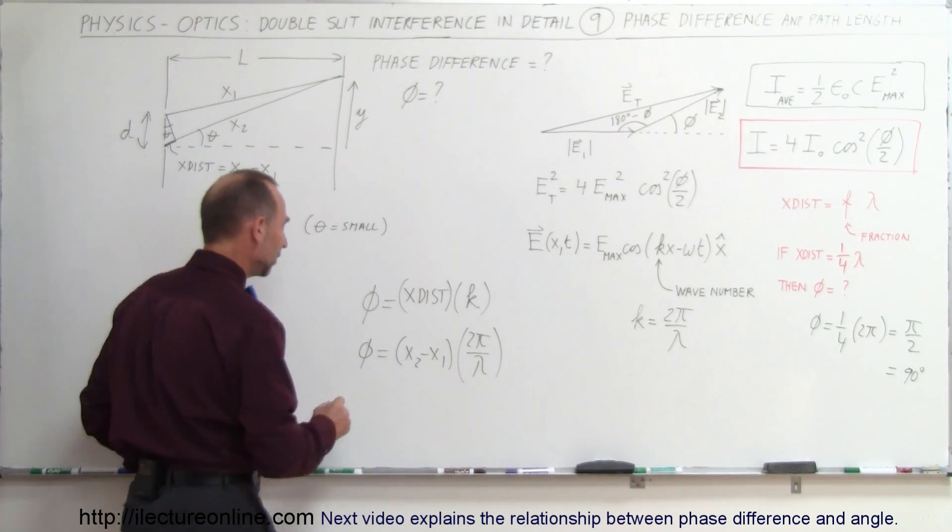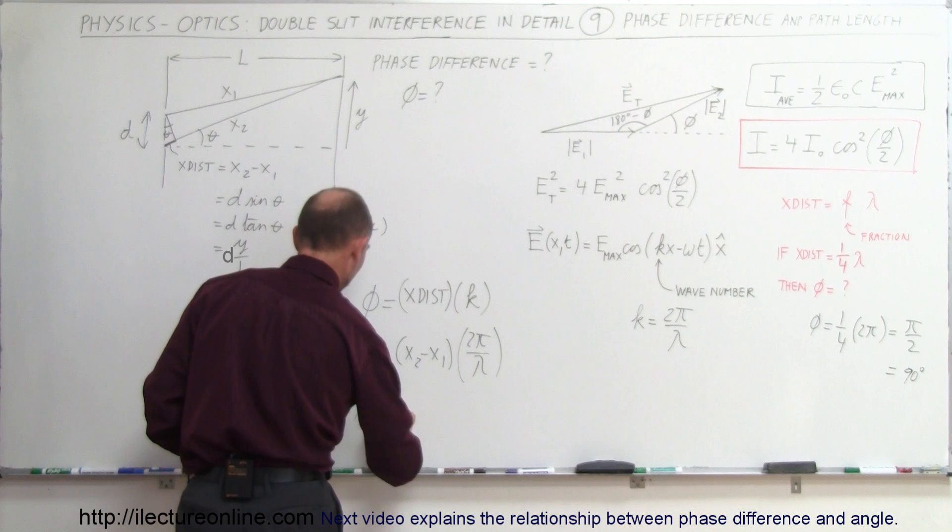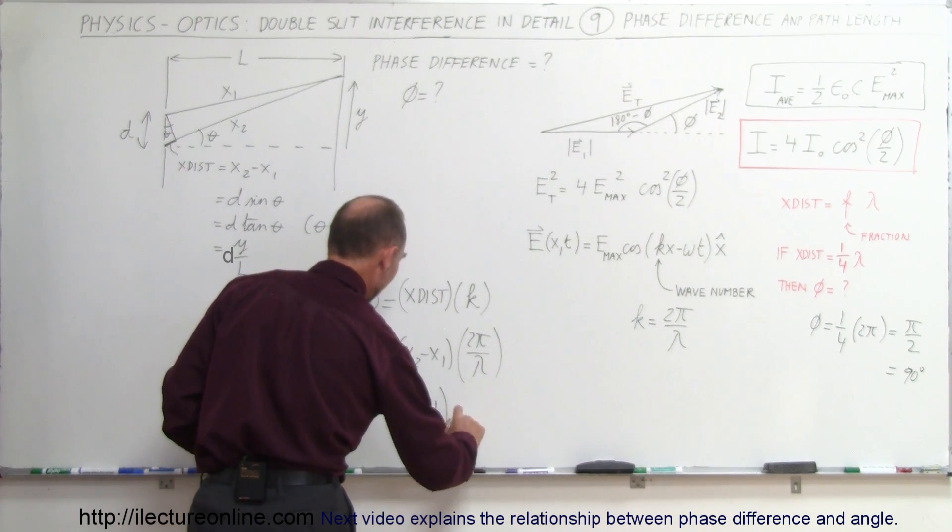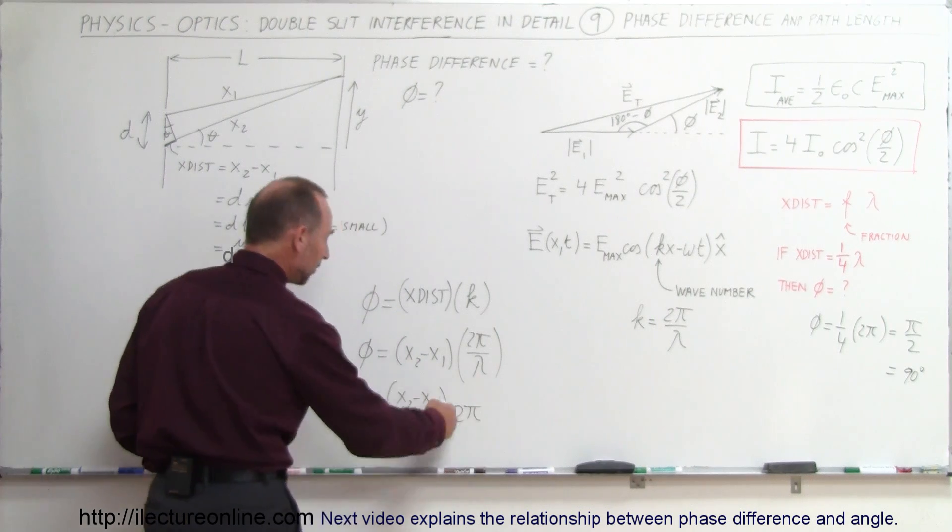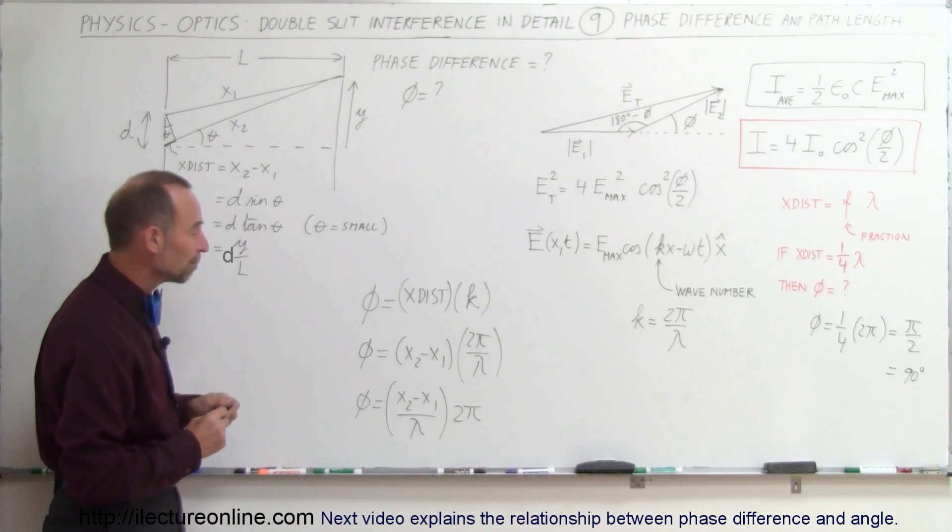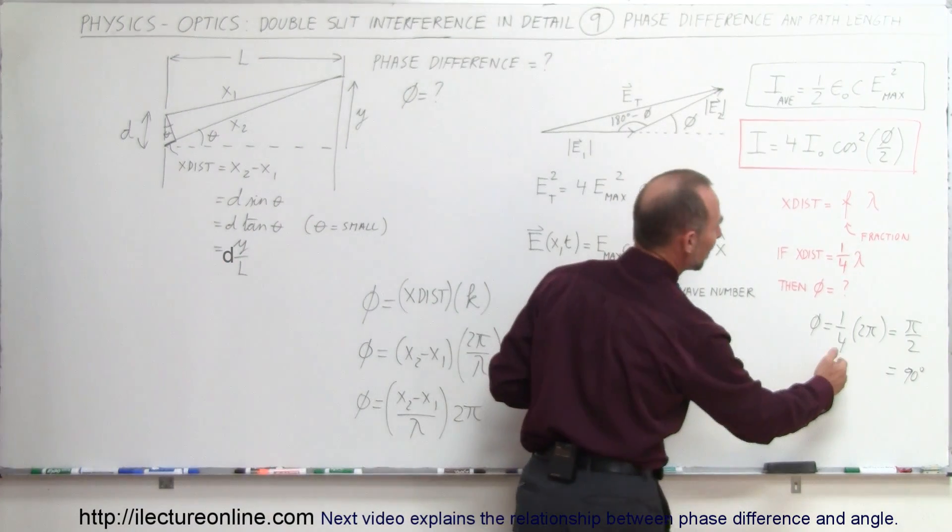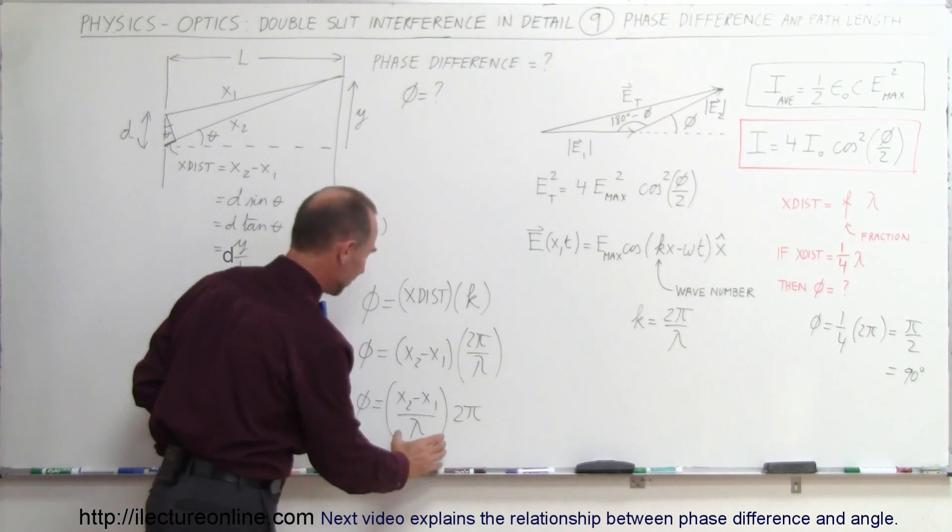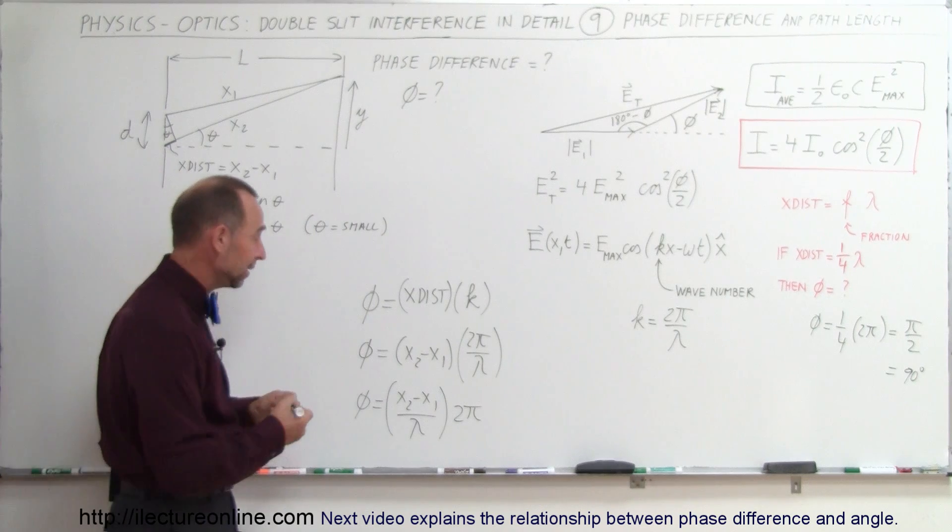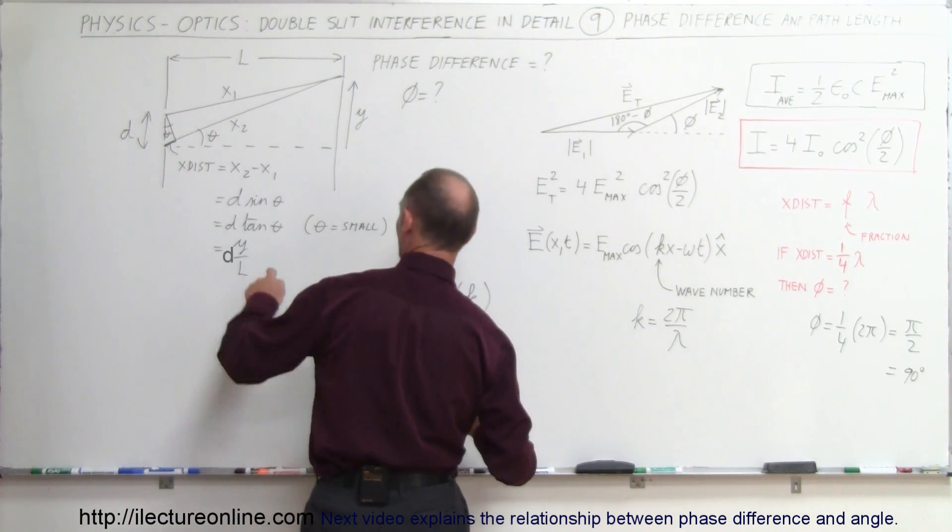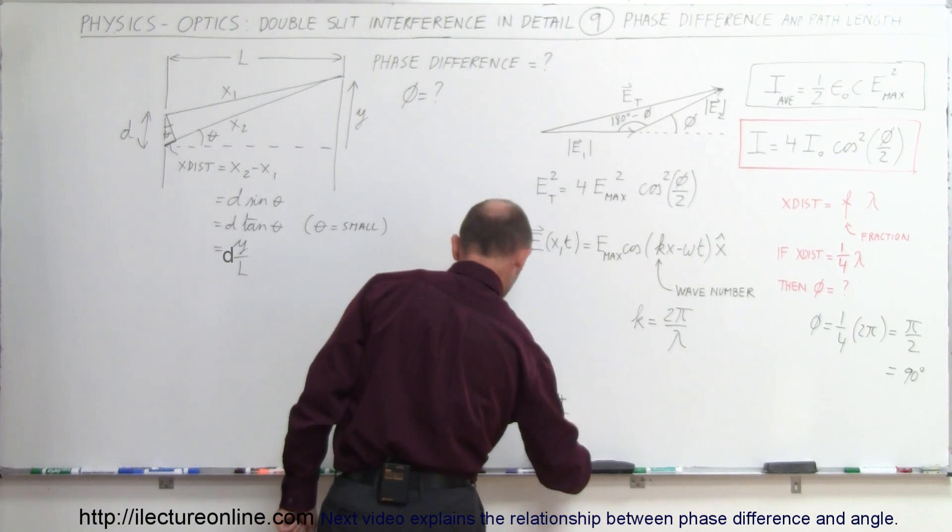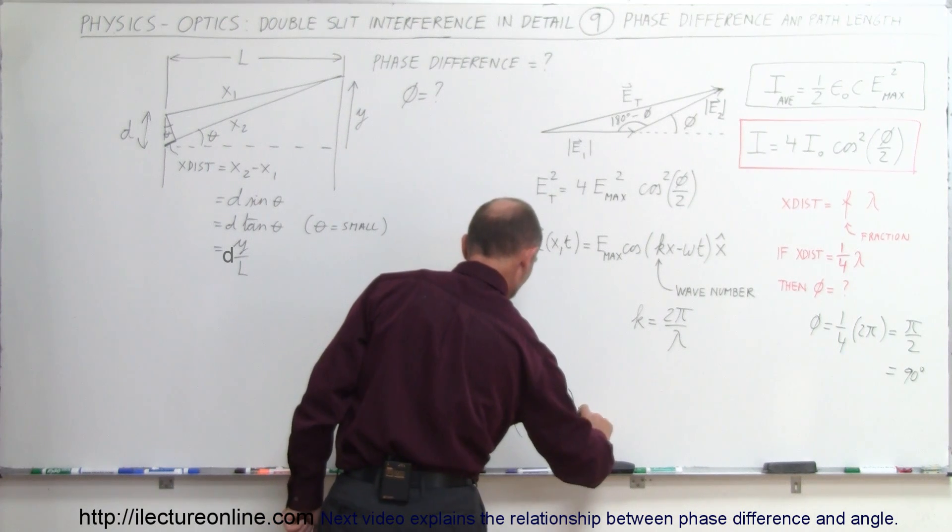Let me rearrange that a little bit. We can say that the phase difference is equal to x2 minus x1 divided by lambda times 2π. This simply becomes the fraction of the wavelength that the extra distance is equal to—that fraction times 2π. Instead of writing x2 minus x1, we could write that this is therefore equal to d sine theta divided by lambda times 2π, or we can write it as d tangent of theta and so forth.